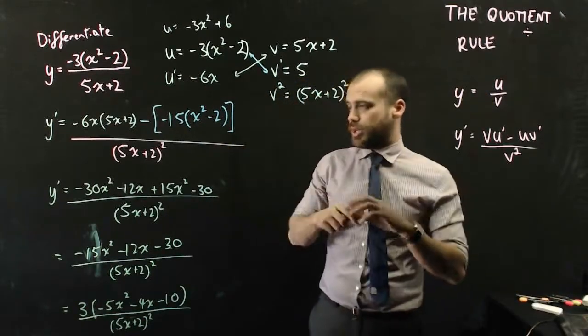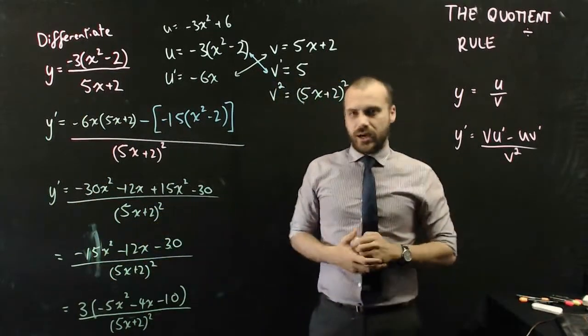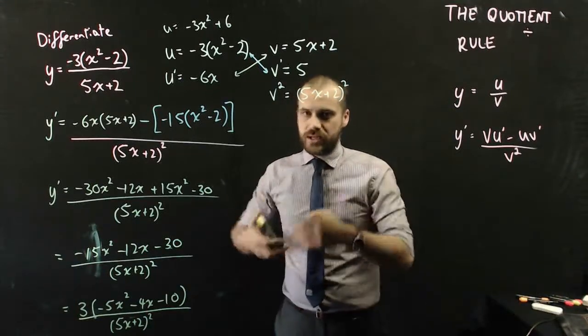That's the quotient rule. Really, that's the derivative. This is the neatening up of that derivative, which you will be asked to do. So, you need to be comfortable with expanding and then factorizing.